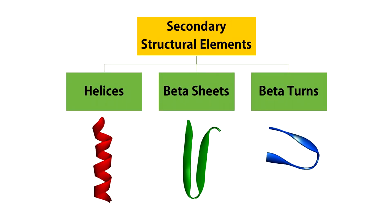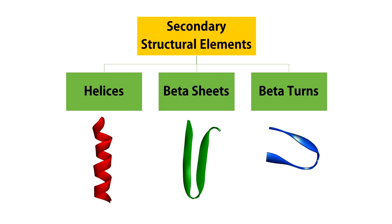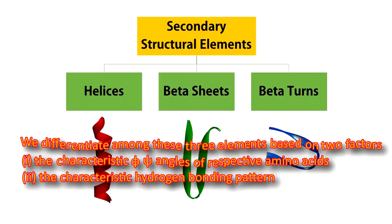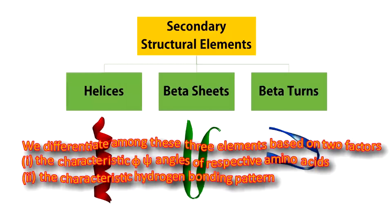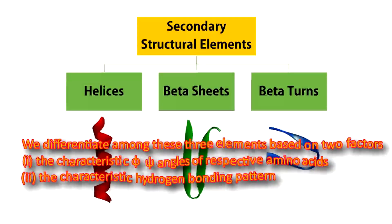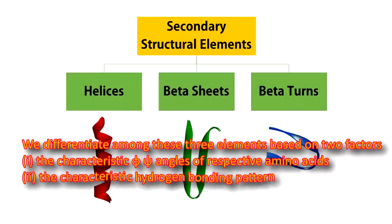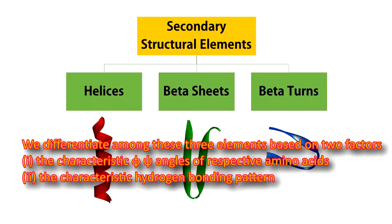Helices, beta sheets and beta turns. We differentiate among these three elements based on two factors: one, the characteristic phi-chi dihedral angles of the respective amino acids, and two, the characteristic hydrogen bonding pattern.